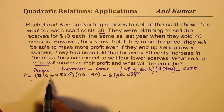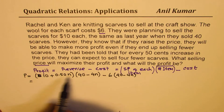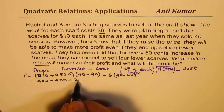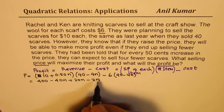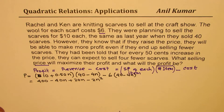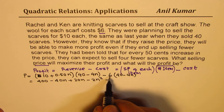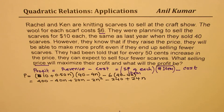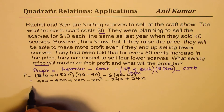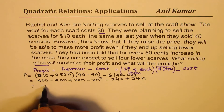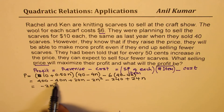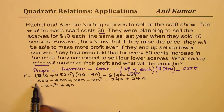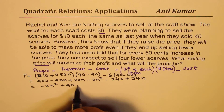Now we expand and simplify to get our answer. So 10 times 40 is 400, minus 40n, plus 20n, minus 2n². That becomes the revenue. The cost is 6 times (40 minus 4n), which gives 240 minus 24n — but since we subtract cost, that becomes minus 240 plus 24n. Combining terms: minus 2n², then the n terms give minus 40n plus 20n plus 24n = 4n, and the constants give 400 minus 240 = 160. So the profit equation is P = −2n² + 4n + 160.